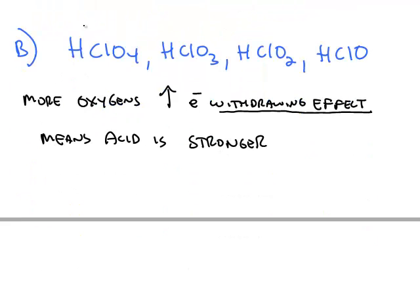So the strongest acid would be perchloric acid. Ka of perchloric acid is essentially infinitely large, and if you move to the one with the fewest oxygens, that Ka is very small, 10 to the negative 8th.